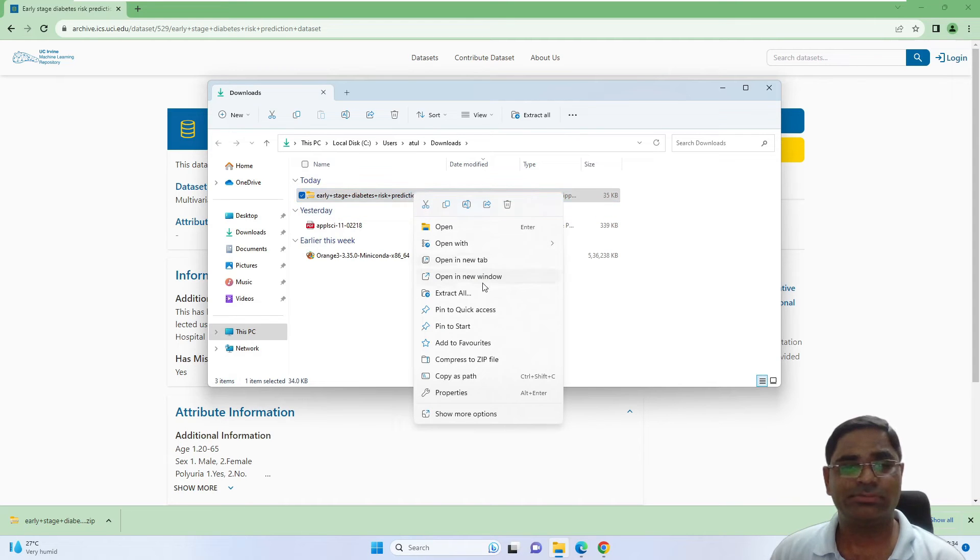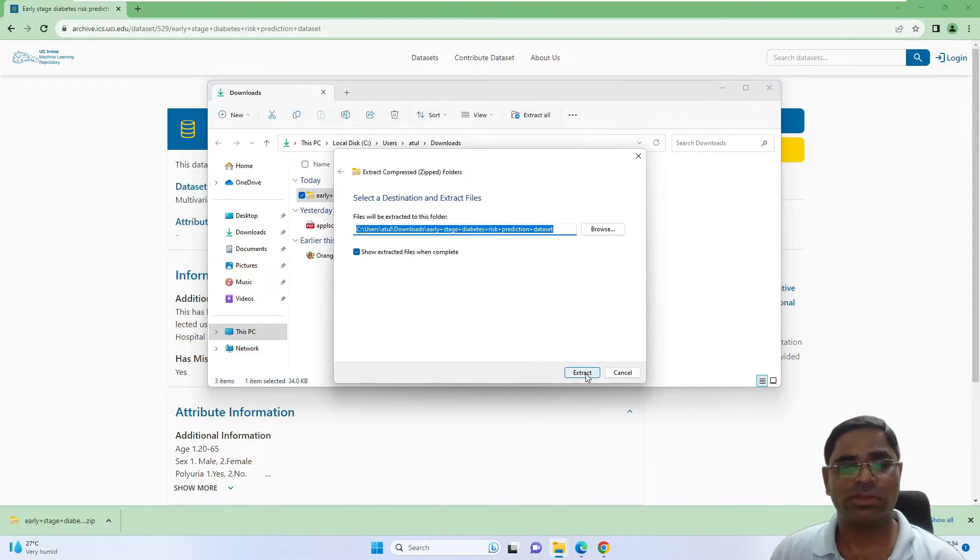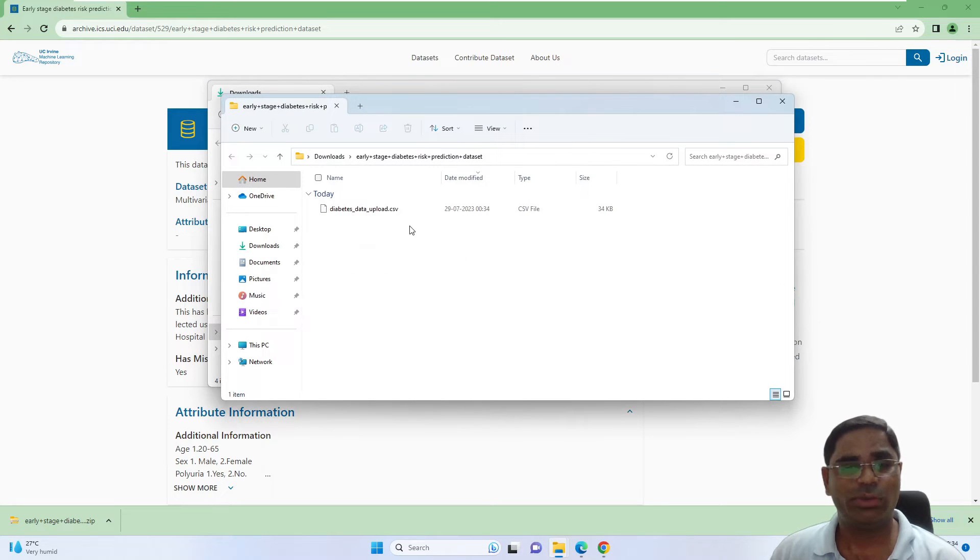I will have to extract it, extract all, click on extract. It would show the dataset. For simplicity, I have kept a copy of this dataset onto the desktop.